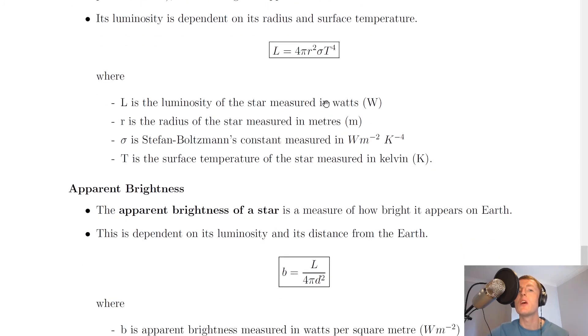We have this equation, which is L equals 4 pi r squared times sigma T to the 4, where L is the luminosity of the star measured in watts, so it's almost like a power in that sense. R is the radius of the star measured in meters. Sigma is Stefan-Boltzmann's constant measured in watts per meter squared per kelvin to the 4, and T is the surface temperature of the star measured in kelvin. Just remember luminosity is how bright a star actually is, not how it appears to us on earth.